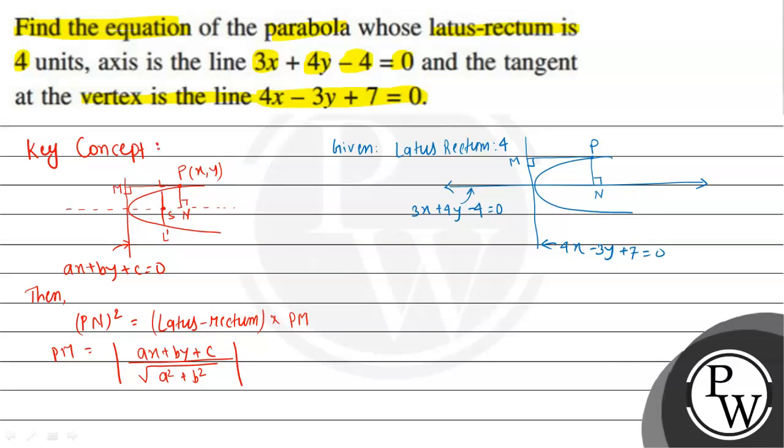The parabola's latus rectum value is given as 4 units. We saw in the concept that the square of this distance PN equals the latus rectum (which we denote as LR) times the distance PM. So first we need to find PN and PM. Let P have coordinates (x, y).